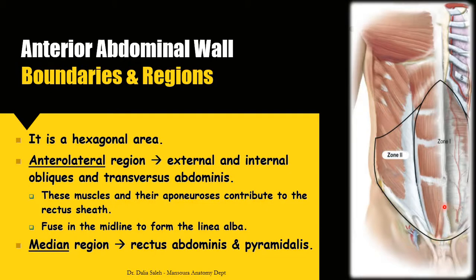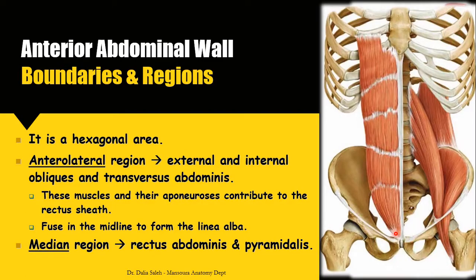The rectus abdominis muscle is vertically located. It takes origin from the pubic bone and the symphysis pubis, then moves upward towards its insertion. While the two muscles move upward, they diverge from each other, and finally insert at the fifth, sixth, and seventh costal cartilages and also at the xiphoid process. The upper end of the rectus abdominis is broad and thin, while the lower part is much stronger, thicker, and narrower.